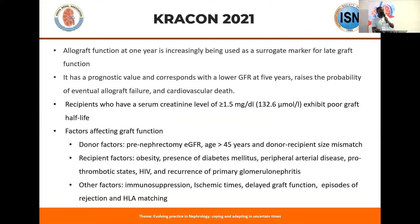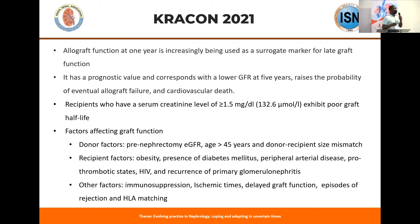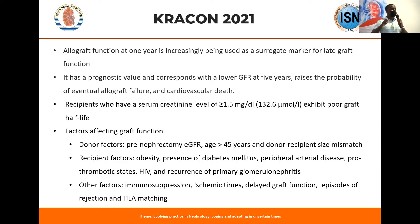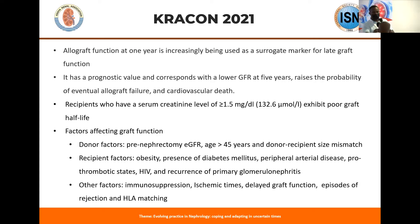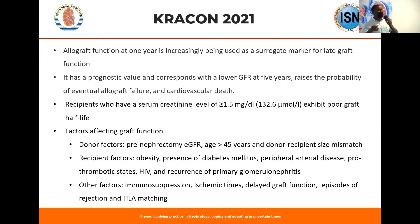I'll dive straight into the introduction. Allograft function at one year is increasingly being used as a surrogate marker for late graft function. We now know that if someone has poor graft function at one year, they have a poorer half-life of the graft at five, ten, fifteen, and twenty years. It has prognostic value and corresponds with lower GFR, raising the probability of eventual allograft loss and cardiovascular death.